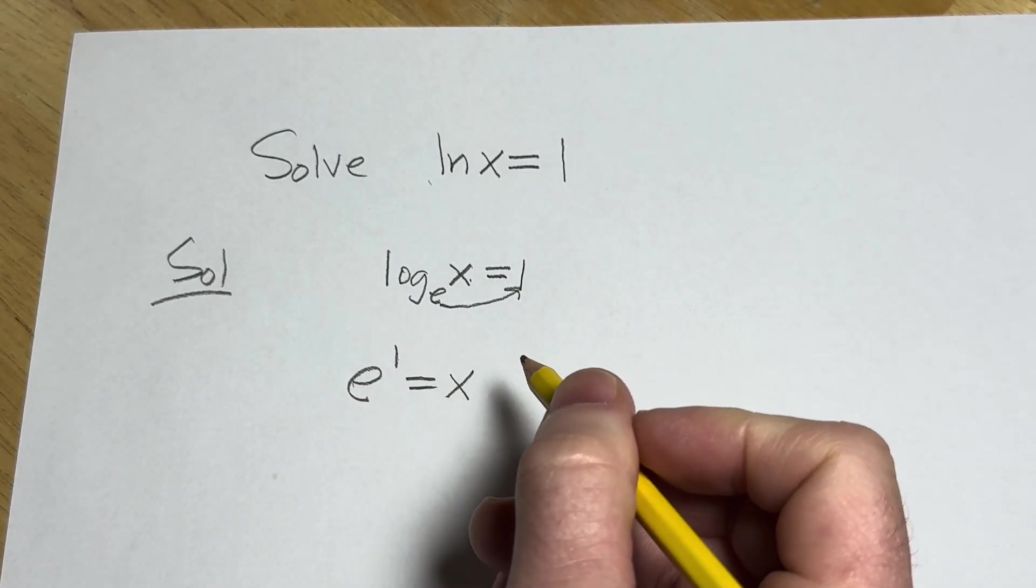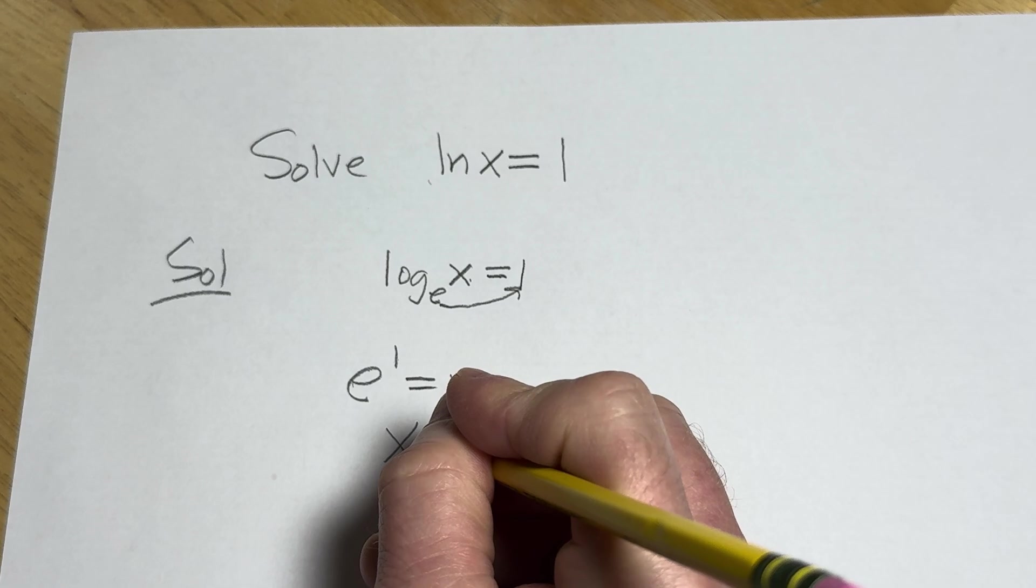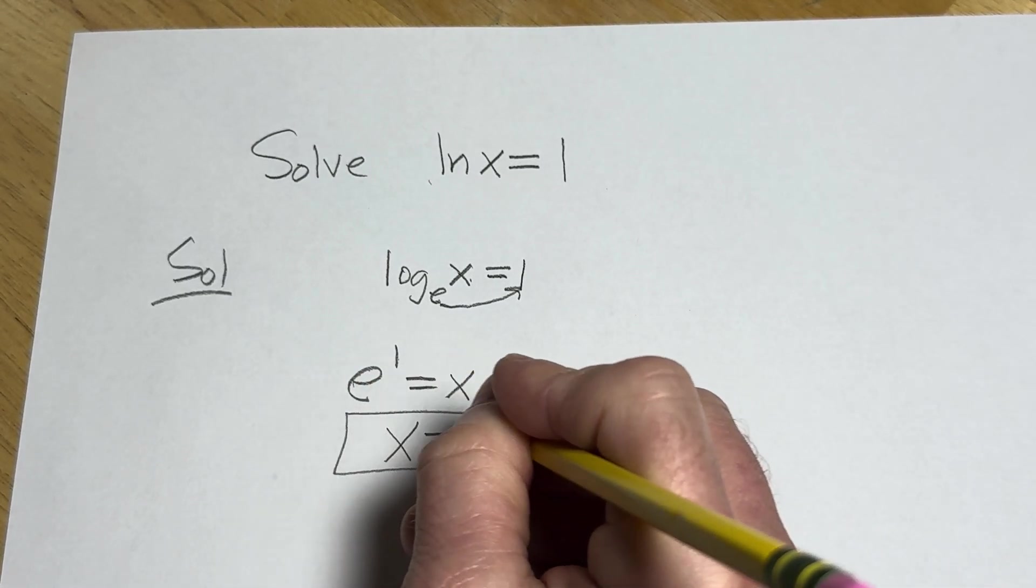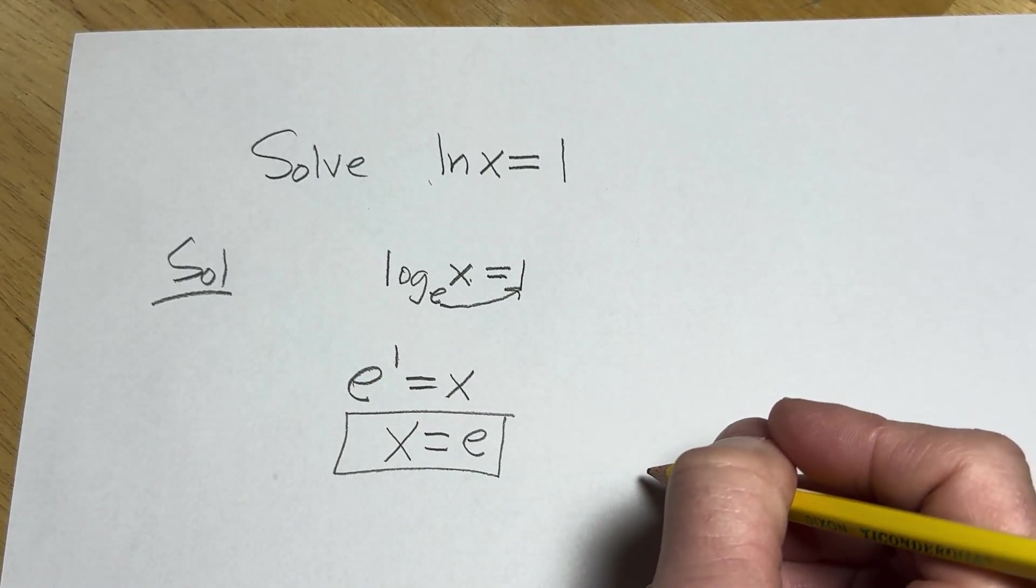Well, e to the first power is just e. So this is x equal to e. And that would be the final answer.